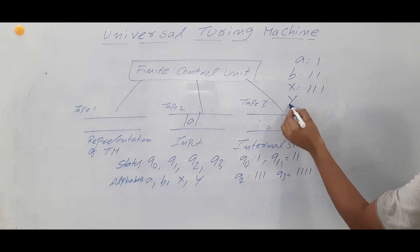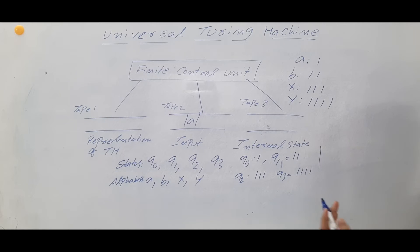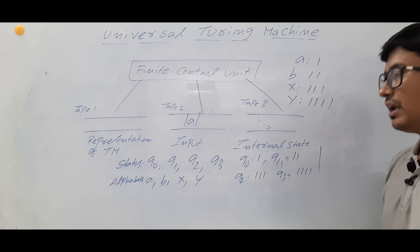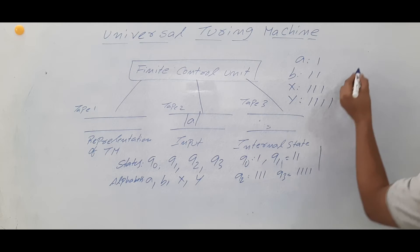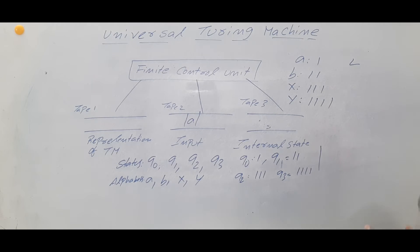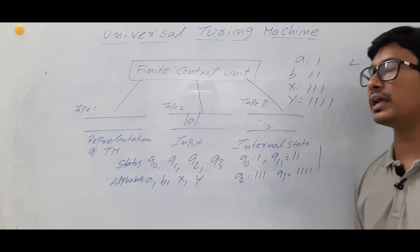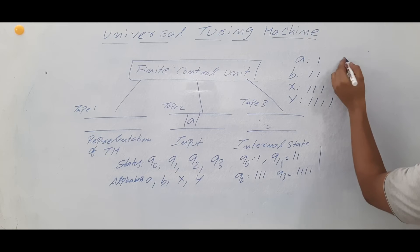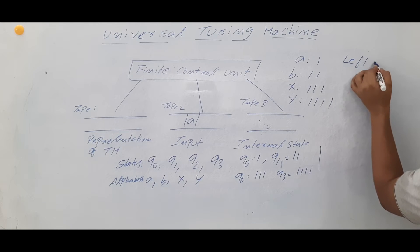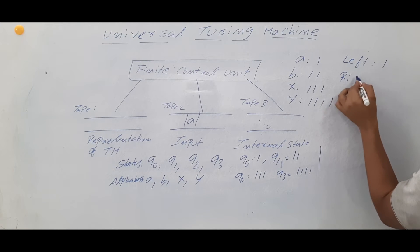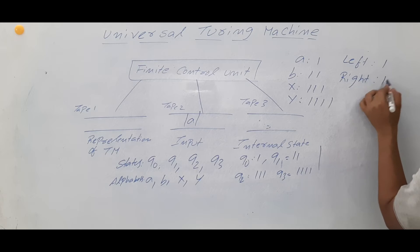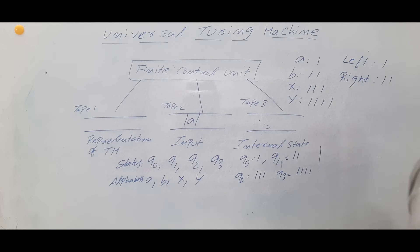Similarly, for the left and right moves on the tape: if the move is Left, I will encode it as one 1; if it is Right, I will encode it as two 1s. Now I want to represent a transition rule.